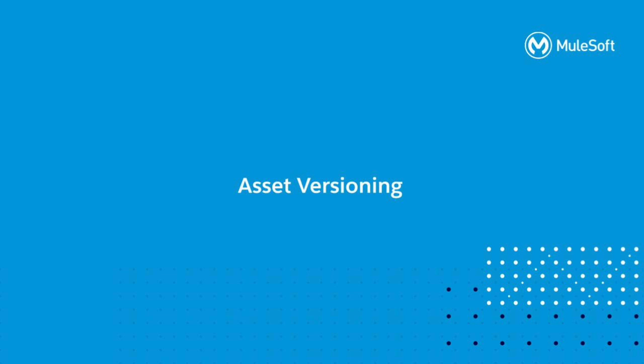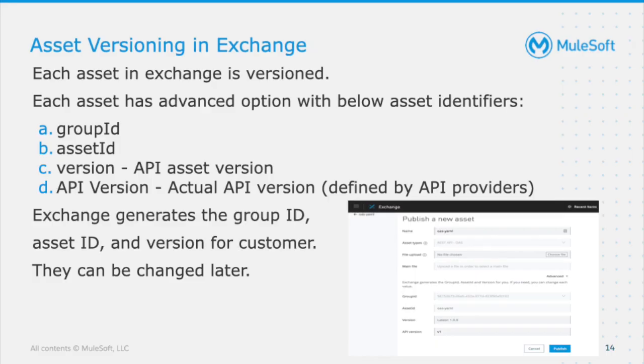Let's take a look at asset versioning and the best practices around it. Each asset is versioned in the sense that each time you create or change an asset, the version changes. Whenever you create an asset, four key things are created: group ID, asset ID, version, and API version. Group ID and asset ID are created by default when you publish or create an asset — customers usually don't change those.